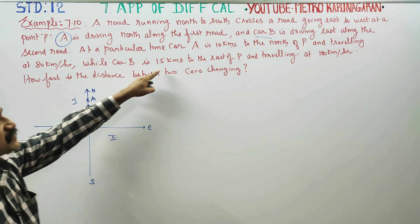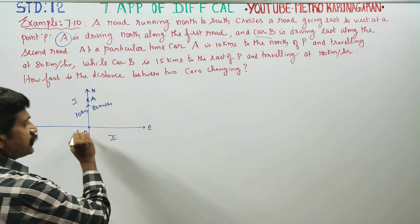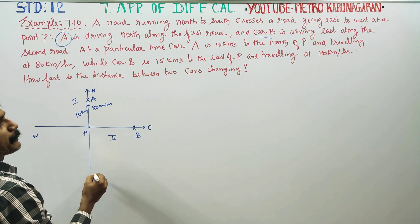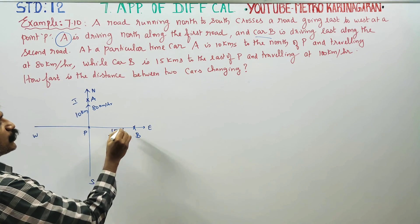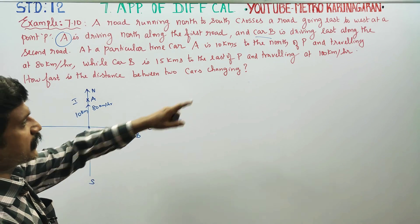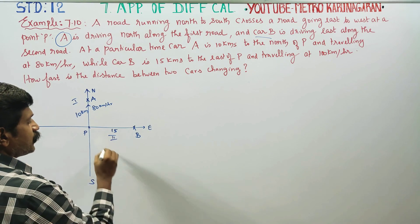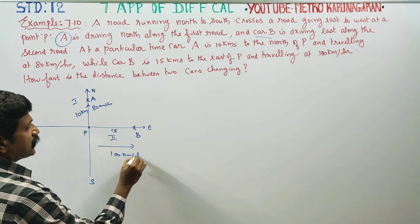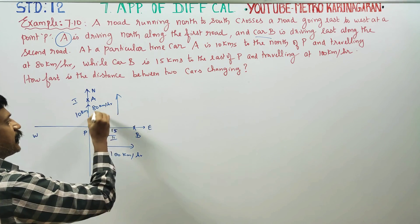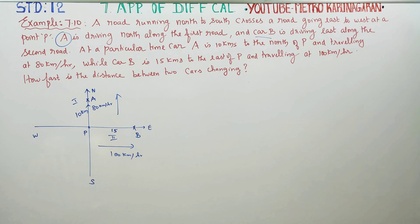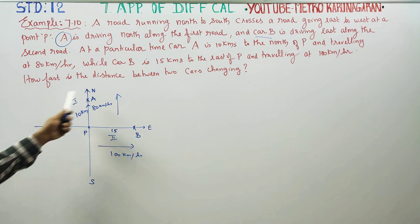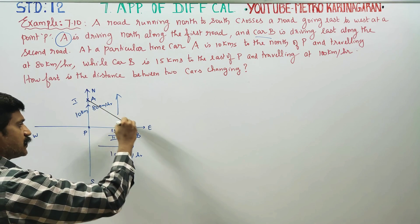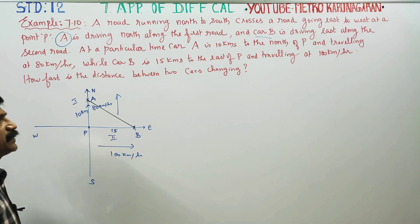While car B is 15 kilometers to the east of P. How fast is the distance between the two cars changing?